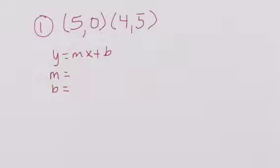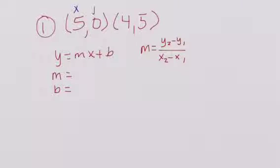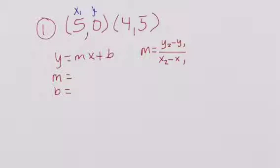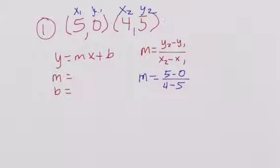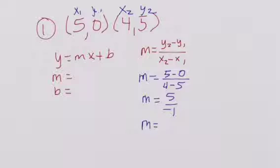The first thing we need to do is find our m. The formula for m is m equals y2 minus y1 over x2 minus x1. We're going to label x1, y1, x2, y2. Substitution step: m is equal to 5 minus 0 over 4 minus 5. So m equals 5 over negative 1. The Hampton Rule says the negative has to go up in the numerator, so negative 5 over 1 is my m.